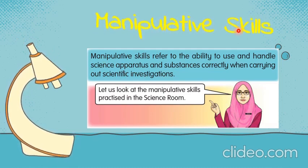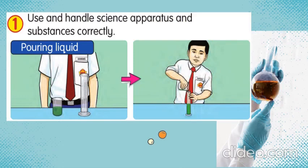For example, when we do an experiment or investigation, we will be using all these manipulative skills. Let's look at the manipulative skills practiced in the science room. Number 1: use and handle science apparatus and substances correctly. When you enter the science room and want to do an experiment, you need to listen to the teacher's explanation before you start.